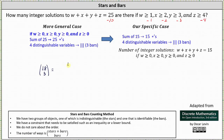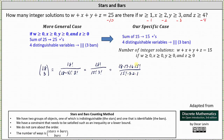And 18 choose three is equal to 18 factorial divided by the product of 15 factorial and 3 factorial, which equals 18 times 17 times 16 times 15 factorial divided by 15 factorial times 3 factorial. And 3 factorial is 3 times 2 times 1. Simplifying: 15 factorial divided by itself is 1. 16 and 2 share a common factor of 2, giving 8. 18 and 3 share a common factor of 3, giving 6. This leaves us with 6 times 17 times 8, which is equal to 816 integer solutions.